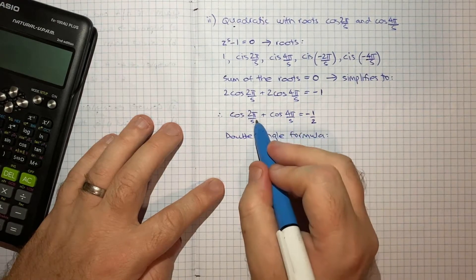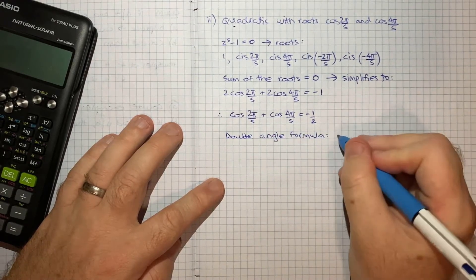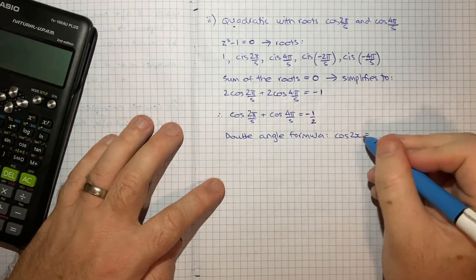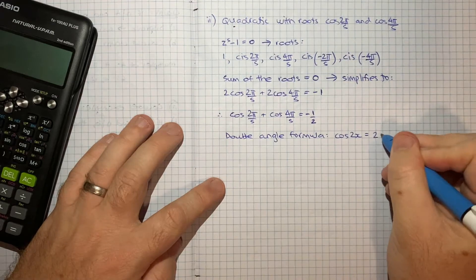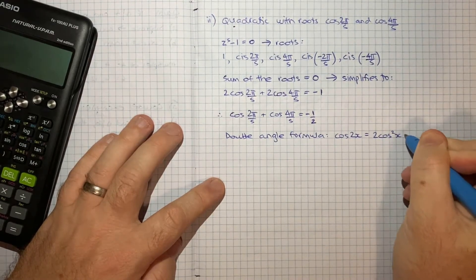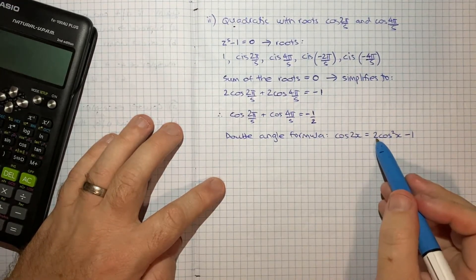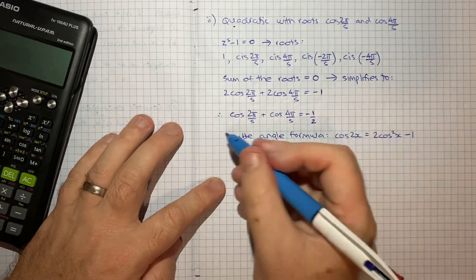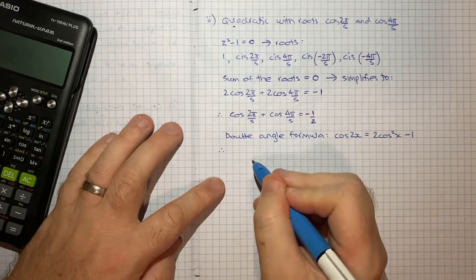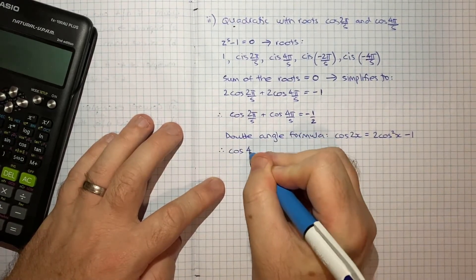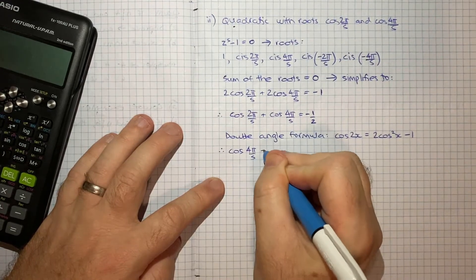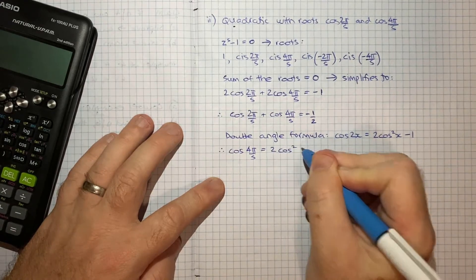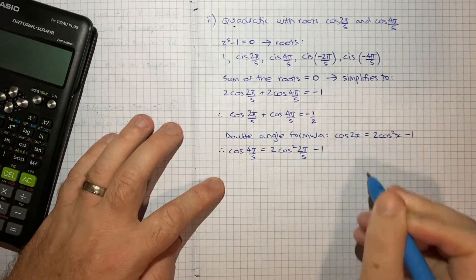And I think the way we can get there is to make use of one of our double angle formulas. The one in particular that's going to help us is, noticing that 4π/5 is 2 times 2π/5, we can use the cos 2x double angle formula, which is cos 2x equals 2 cos squared x minus 1.